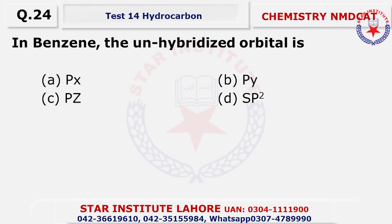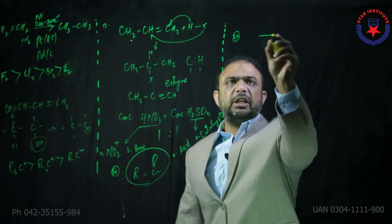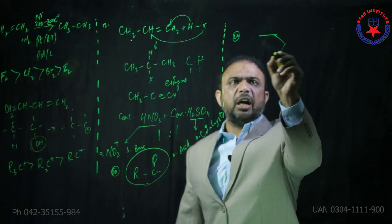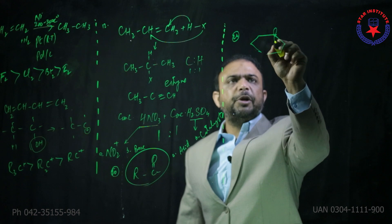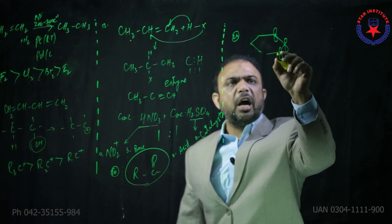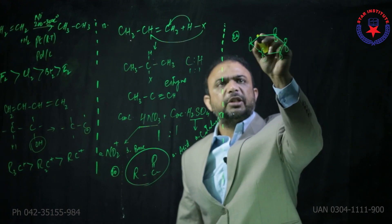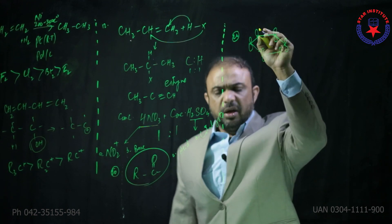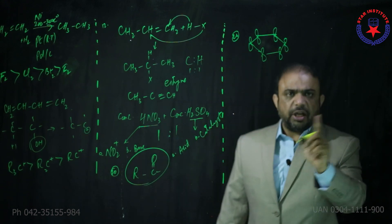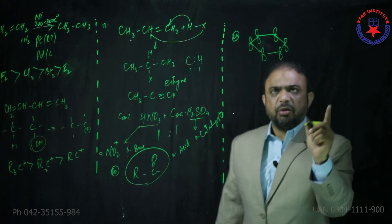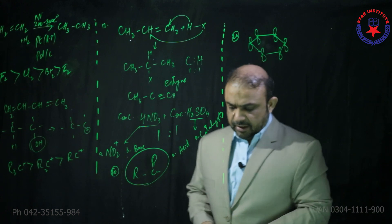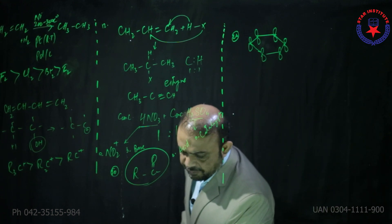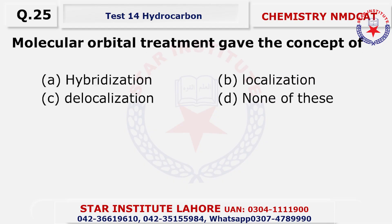Question 24: in benzene, the unhybridized orbital — when you draw the benzene structure, every carbon is sp2 hybridized, and one unhybridized pz orbital is present above and below the plane of the benzene ring, which delocalizes the electron density. So the choice is pz.